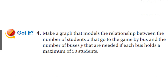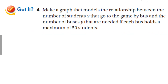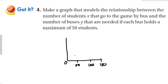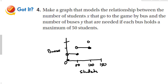Last problem: make a graph modeling the relationship between the number of students x that go to the game by bus and the number of buses y needed, if each bus holds a maximum of 50 students. Same idea — the x-axis goes 0, 50, 100, 150, and the y-axis shows 1, 2, 3 buses. Zero people means zero buses; 1 to 50 students needs 1 bus; 51 to 100 needs 2 buses; 101 to 150 needs 3 buses. We get our step function stepping up.